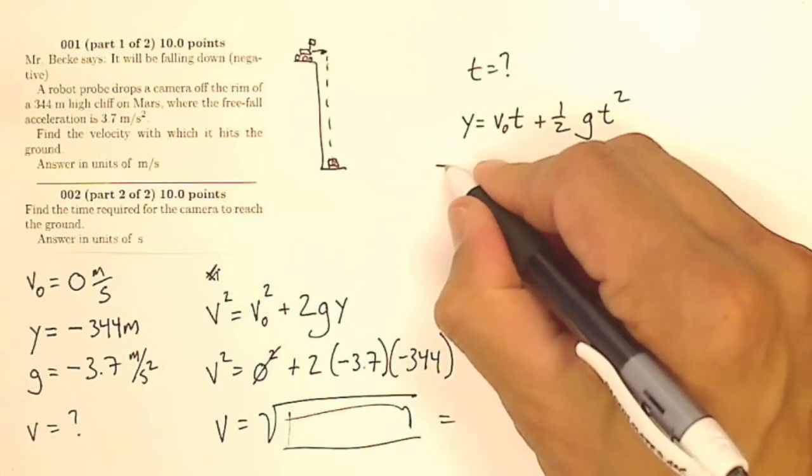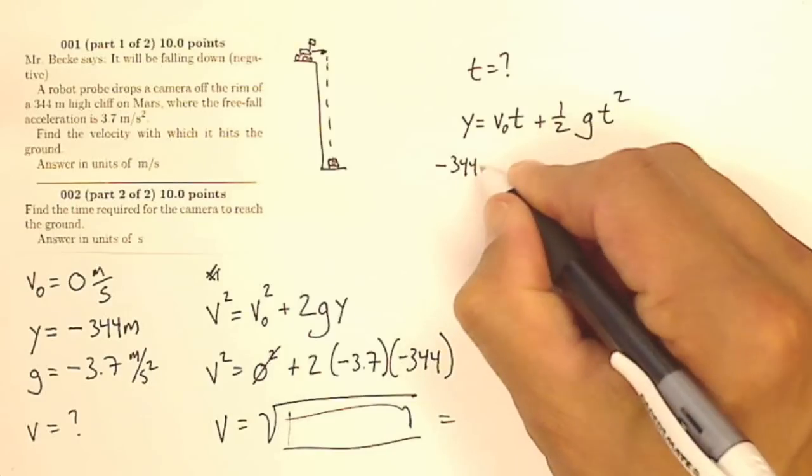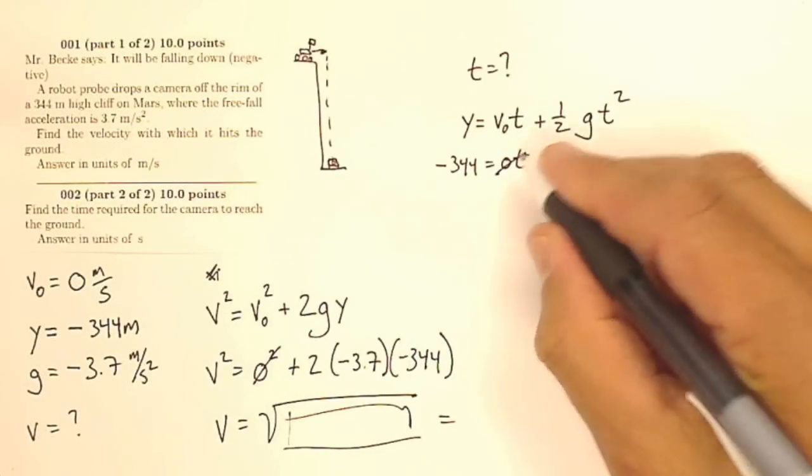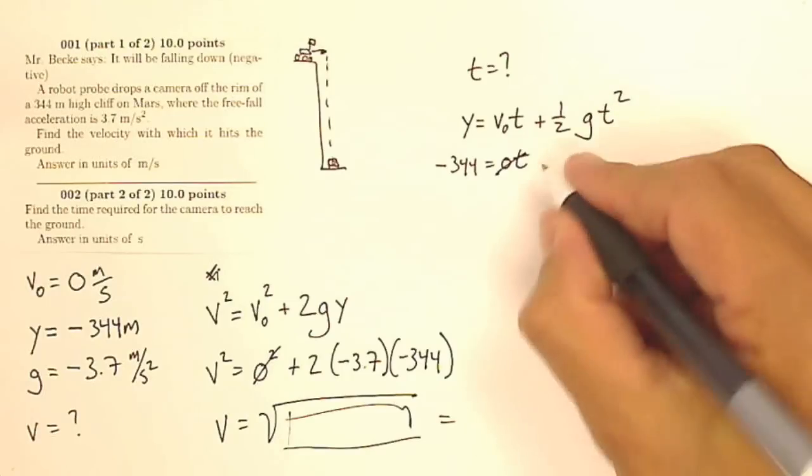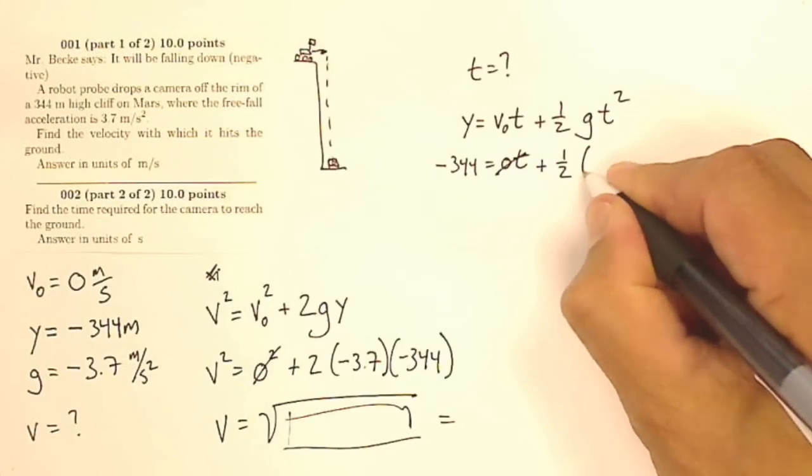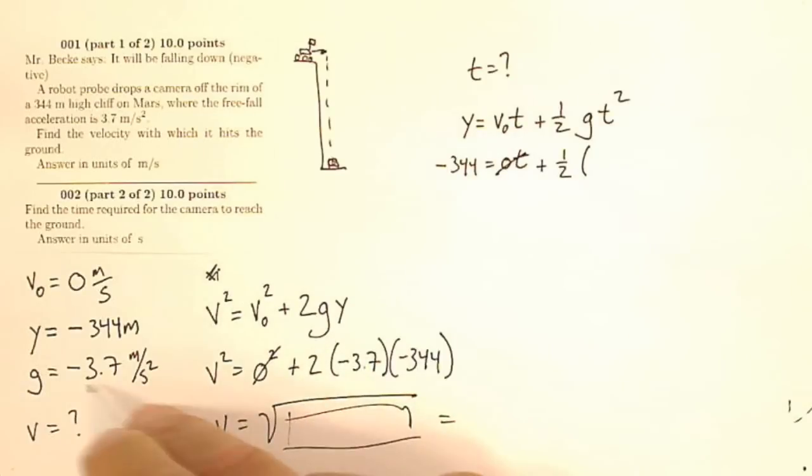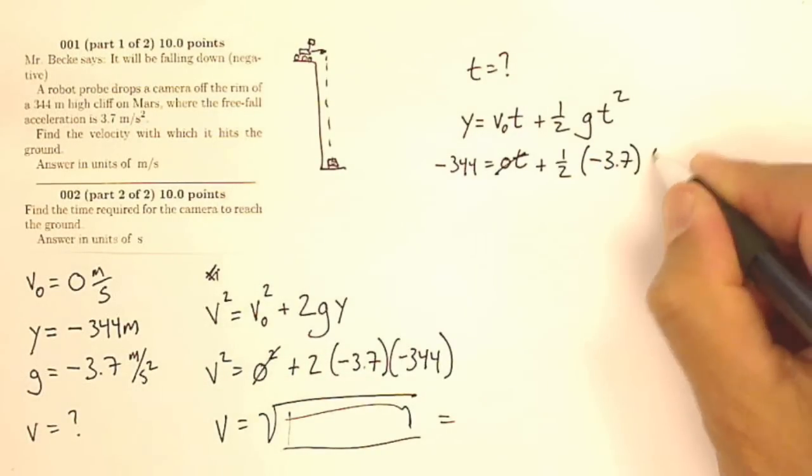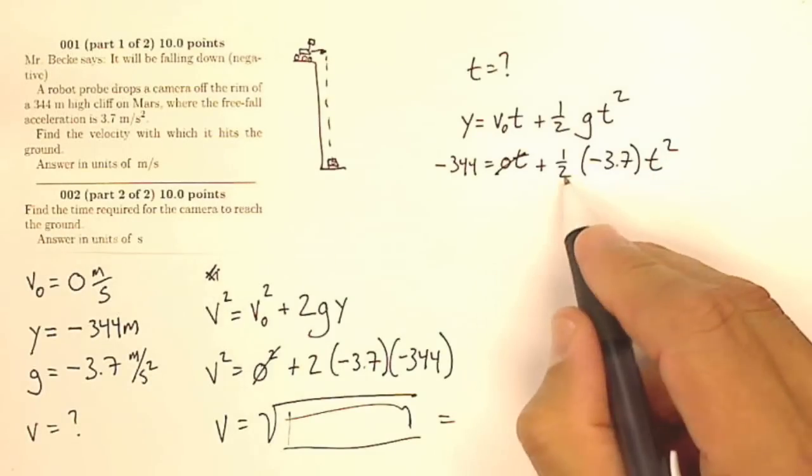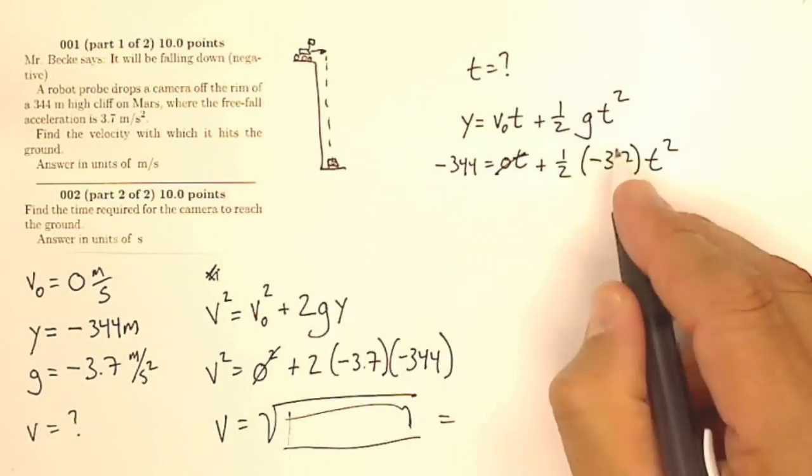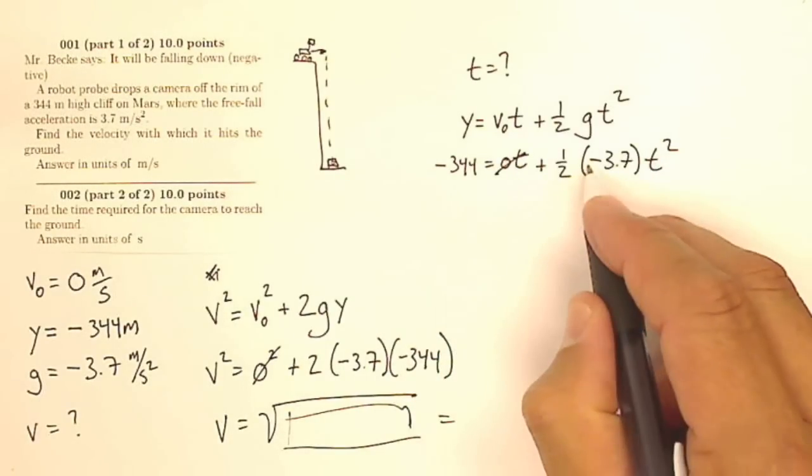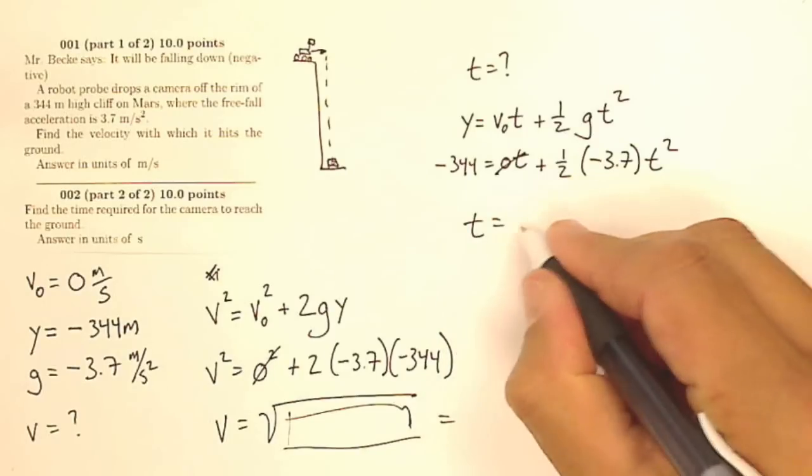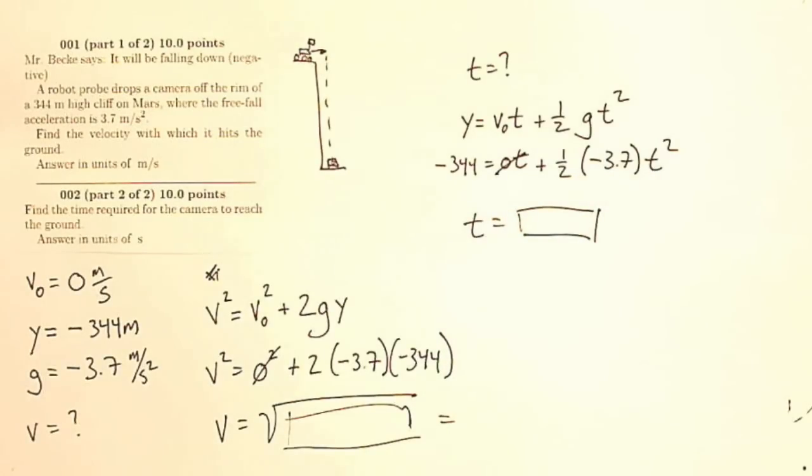So my displacement is negative 344. My initial velocity is zero times time, so that goes away, which is good because otherwise I'd have a quadratic, plus one-half of my acceleration, my acceleration on Mars is negative 3.7, times time squared. So I will multiply both sides by 2, divide by 3.7 negative, and that negative and that negative will go away, so I can take a square root and get my time, and when I get my time, that's going to be my answer to number 2.